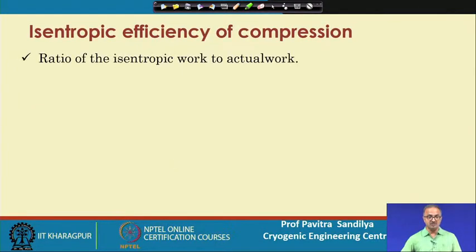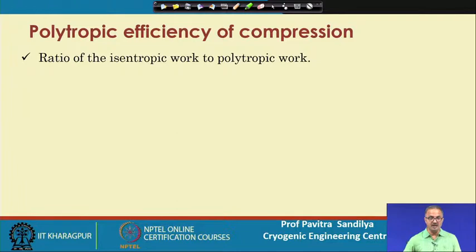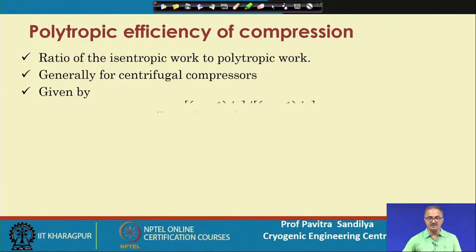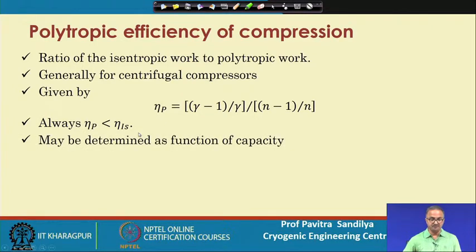Isentropic efficiency of compression is the ratio of isentropic work to actual work. Polytropic efficiency is the ratio of isentropic work to polytropic work and is generally used for centrifugal compressors. It is expressed in terms of gamma/(gamma-1) for the isentropic process and (n-1)/n for the polytropic process. Polytropic efficiency is always less than isentropic efficiency, and may also be determined from empirical correlations based on the gas capacity in cubic feet per minute.